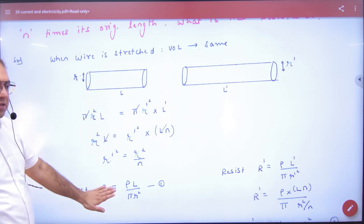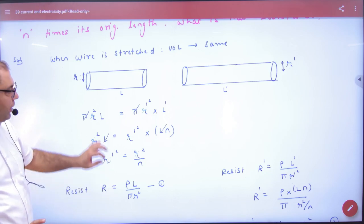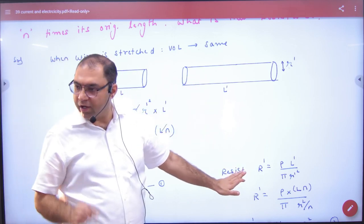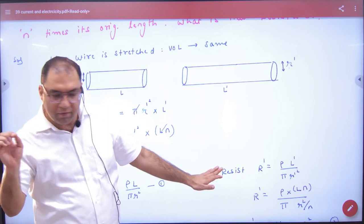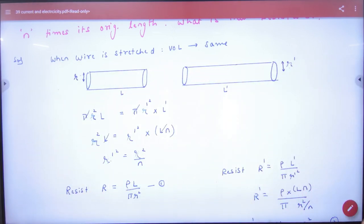Now what is the resistance of this wire? ρL by area of cross section. Area of cross section is πR². Capital R. The new wire of resistance is ρL' by πR'². Because the radius has changed, the length has changed.